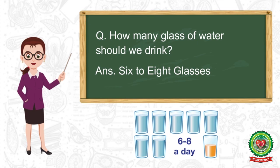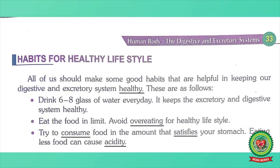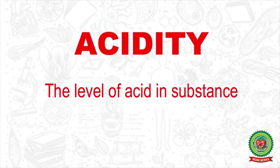Habit number two: eat food in limit — avoid overeating for a healthy lifestyle. Underline 'overeating' — meaning: eating too much. We should eat a limited amount of food and not in large amounts, as it can create problems in our digestive and excretory system. Habit number three: try to consume food in the amount that satisfies your stomach, as eating less food can cause acidity. Underline 'consume' — meaning: eat. Underline 'satisfy' — meaning: meet the needs. Underline 'acidity' — meaning: the level of acid in a substance.